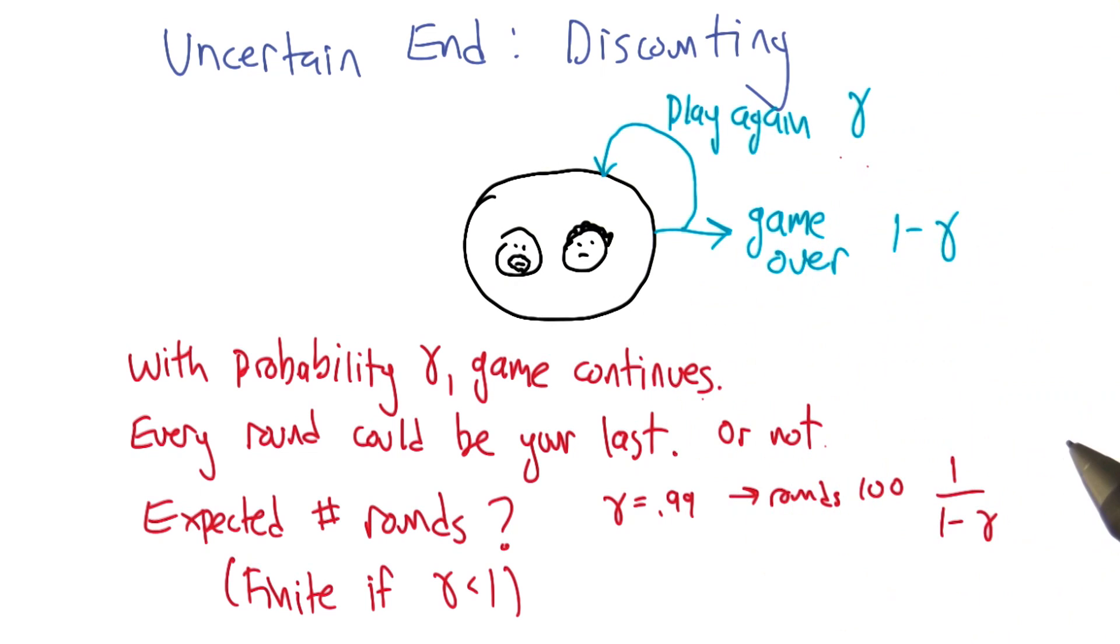And yeah, we could go through the argument as to why that's what it is. But this 1 over 1 minus gamma is what shows up all the time. If gamma is 0, then we're talking about 1 over 1, the game lasts one round. That's exactly what we'd expect. As gamma gets closer and closer to 1, this quantity is getting closer and closer to infinity. So, in fact, it becomes unbounded as gamma hits 1.